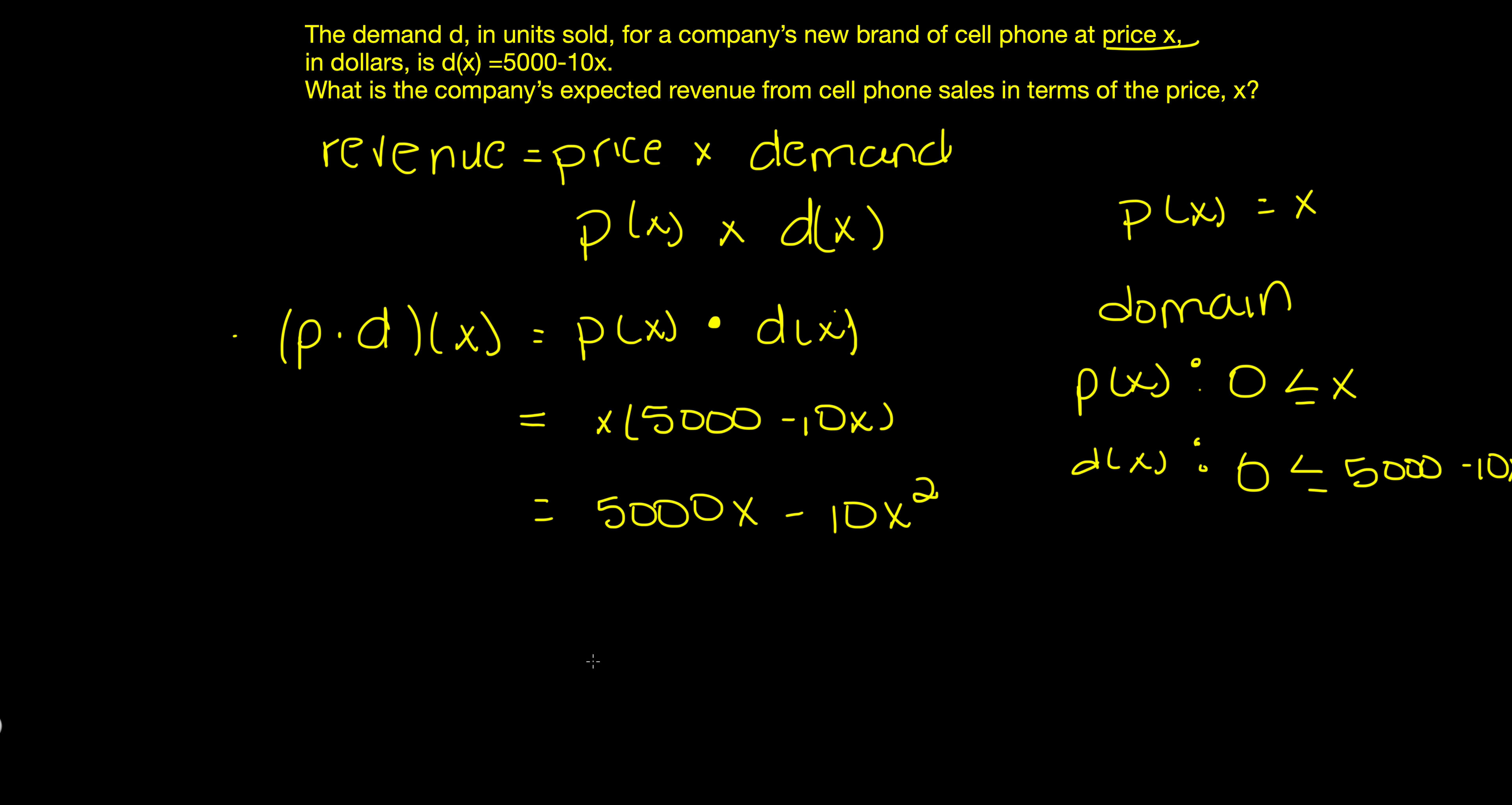So the revenue of the company, r(x), can be modeled by the equation 5,000x minus 10x², where it cannot actually be less than 0. This is a quadratic function. The domain is all real numbers, but in our case, our domain is going to be 0 and above. So there we go. There is our example 2 from the Envision's Algebra 2 math book, multiplying two different functions together.